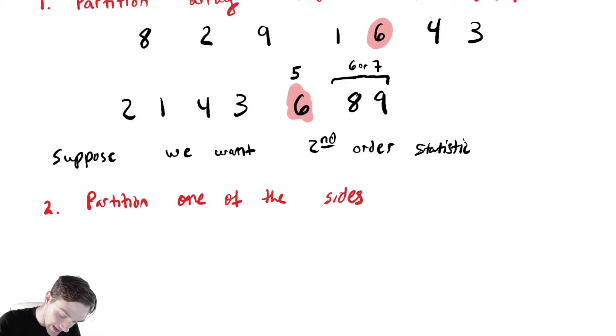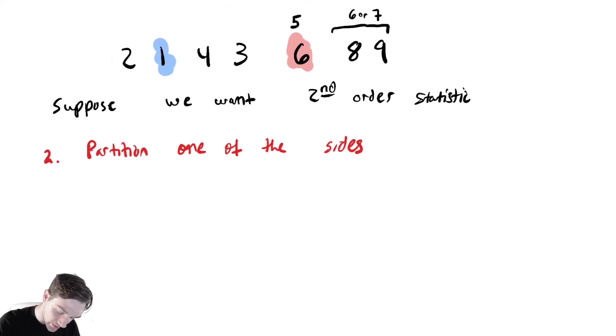Let's suppose that our next partition point was one. That's what we chose randomly. If we did that, I'm going to stop drawing any of this stuff over here because it has nothing to do with where I care about searching.